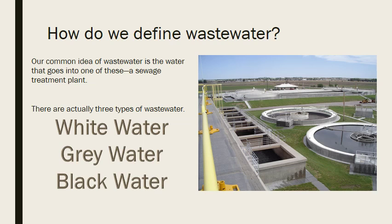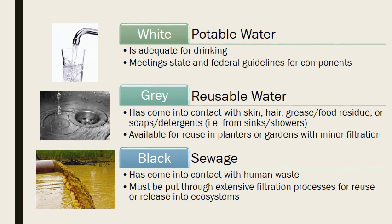When we talk about wastewater, we have to define it in one of three different categories: white water, gray water, and black water. They are defined by the kinds of substances that they come into contact with during their use.